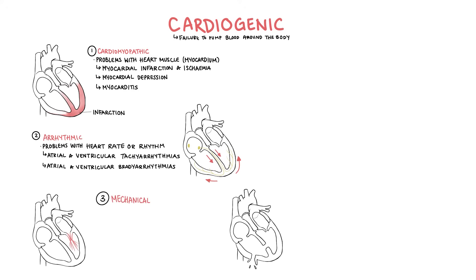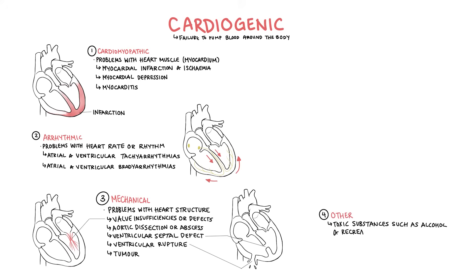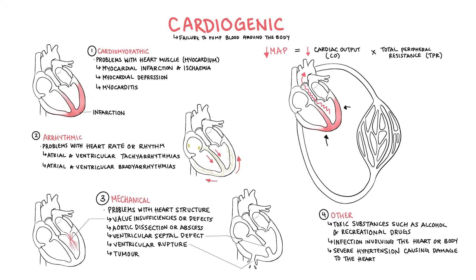Mechanical causes of cardiogenic shock involve problems with the heart structure itself. So for example, valve insufficiencies or defects, aortic dissection or abscess, ventricular septal defect or rupture of the ventricles or a tumor that's present. Other causes of cardiogenic shock include toxic substances such as alcohol, recreational drugs, infection involving the heart or the body as well as severe hypertension causing damage to the actual heart itself. All these causes will lead to a reduced cardiac output which means a reduced mean arterial pressure.